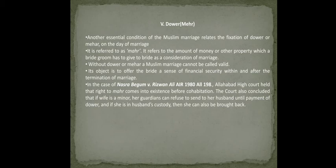The court also concluded that if the wife is a minor, her guardian can refuse to send her to her husband until payment of Dower. And if she is already in the husband's custody, she can be brought back. So these are the five essential elements of a valid marriage under Muslim law — proposal and acceptance, free consent, sufficient witnesses, competency of parties, and dower.